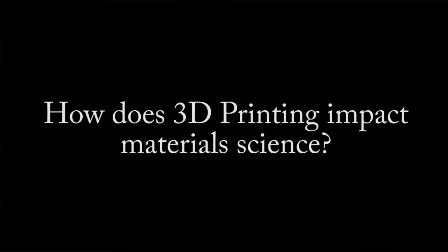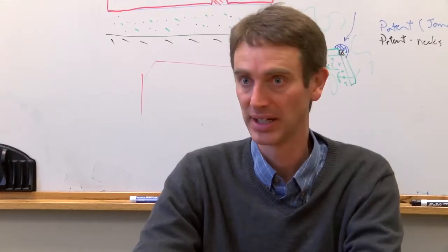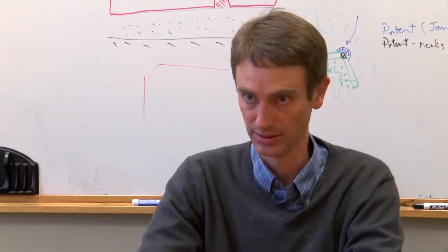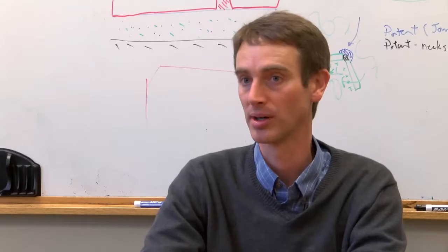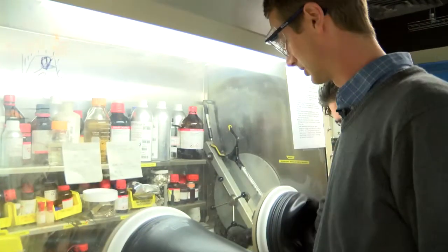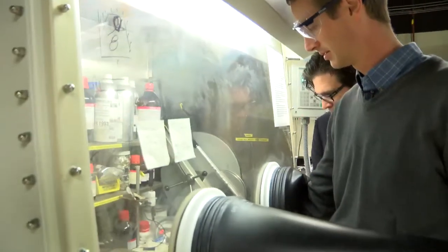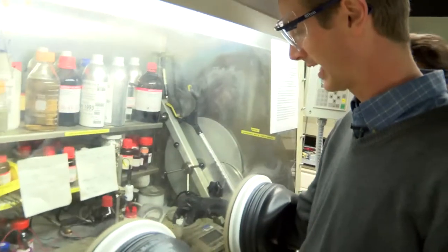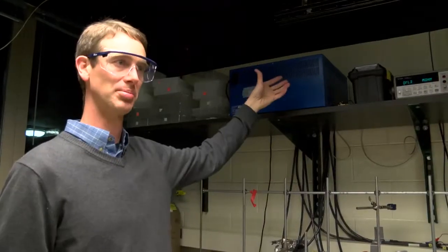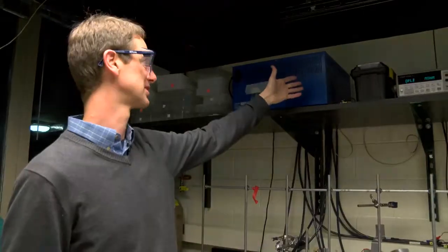3D printing, the way that we think about it, is very broad in how can I three-dimensionally structure materials in what we would call deterministic ways. And so some of our work on batteries, we start by doing electroplating. So we electroplate nickel, a very simple metal. These are easy to electroplate.